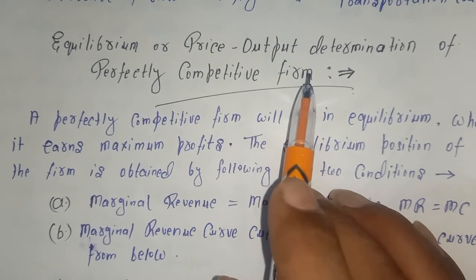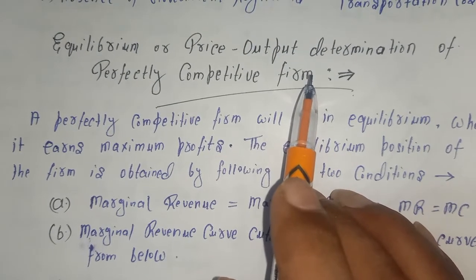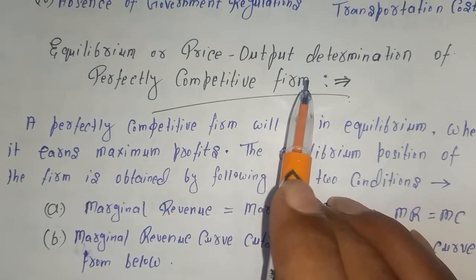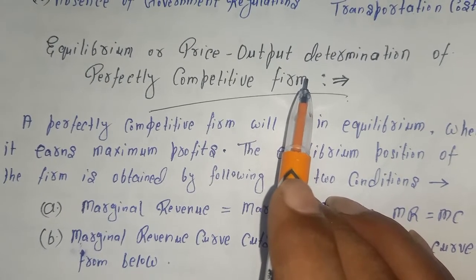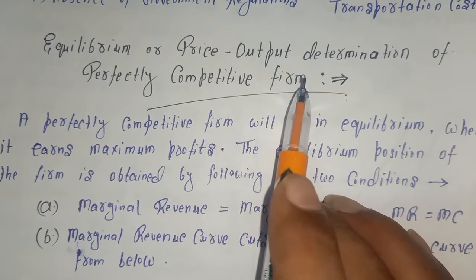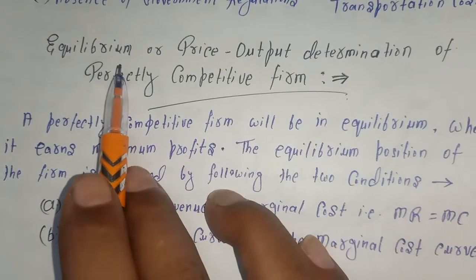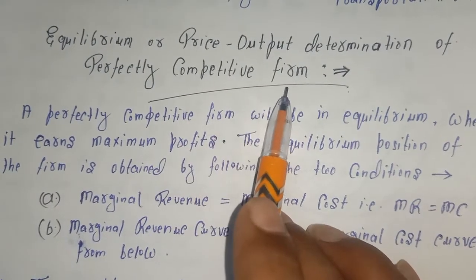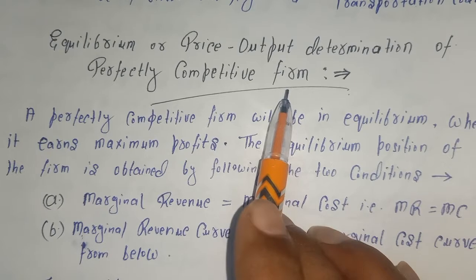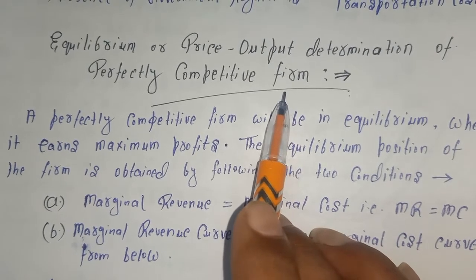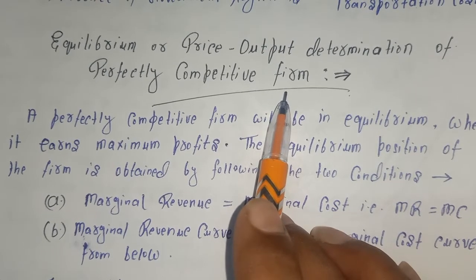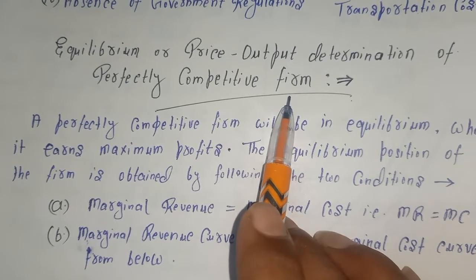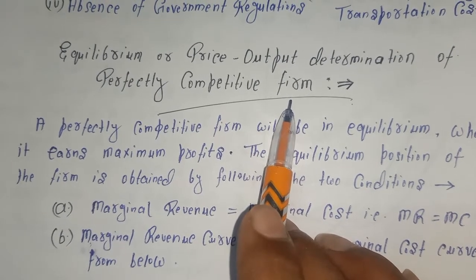Dear students, this is Praveen Agrawal from the Management Department, Rotary Institute of Management and Technology. Welcome to today's lecture of Managerial Economics. Today we will discuss about the equilibrium or price-output determination of a perfectly competitive firm — how the price and output of a particular firm is determined in a perfectly competitive market.